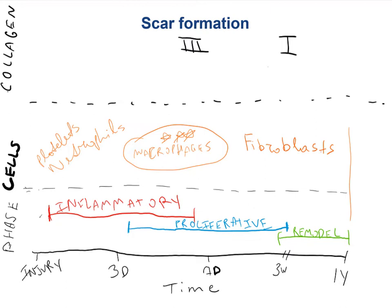The macrophages come in after three days and are the most important cells during the proliferative phase. The proliferative phase overlaps a little bit with the inflammatory phase but lasts about three weeks to a month. It's called the proliferative phase because after you've cleaned out all the debris during the inflammatory phase, you start putting out new cells and laying down the initial parts of the scar — a lot of cells proliferating and dividing to start the healing process. The macrophages are important because they secrete cytokines and growth factors and recruit key cells. Shortly after the macrophages, fibroblasts come in too, and these are the cells that help lay down collagen.